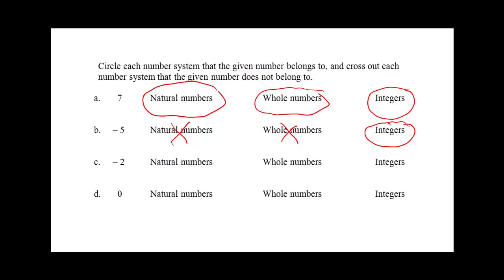Similarly, negative 2 like negative 5 is not a natural number or a whole number, but it is an integer.